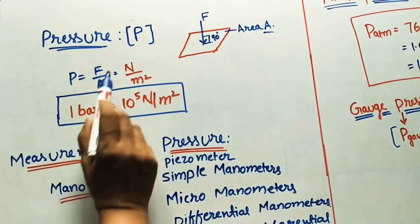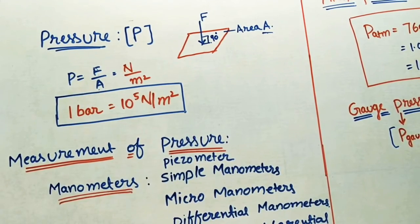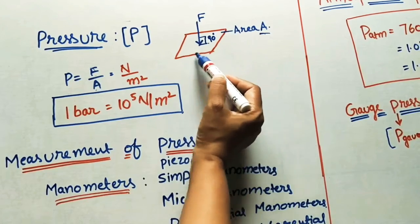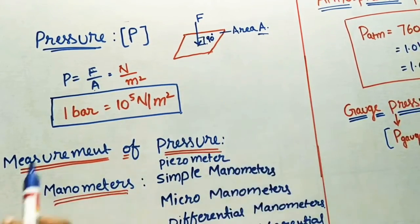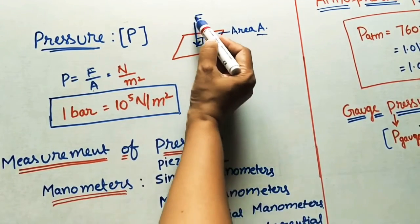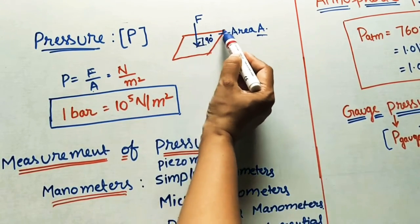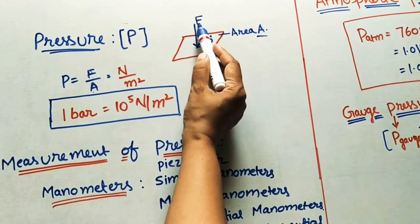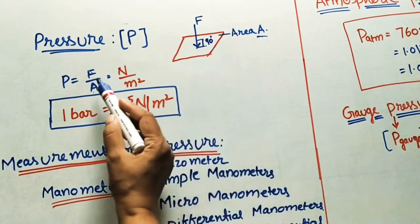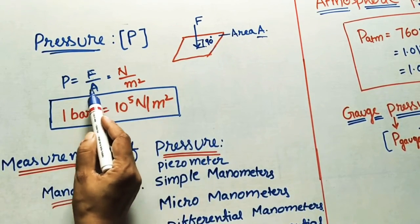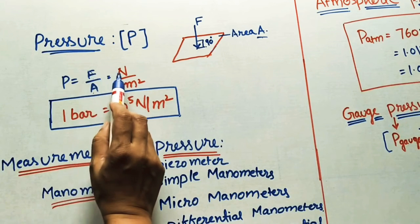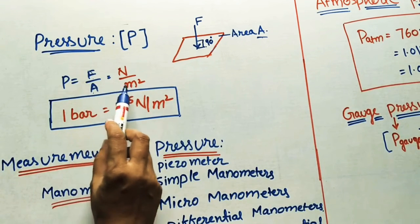We are taking the symbol capital P for pressure. It is the normal force acting on a given area per unit area. Normal force means the force is making 90 degrees with the given area. It is the ratio of normal force to the given area, F divided by A — that is the pressure formula.